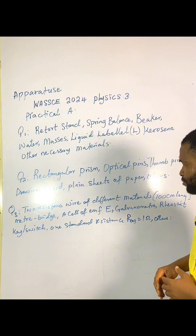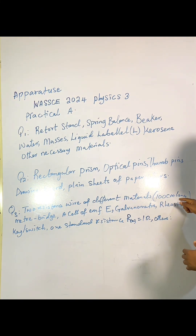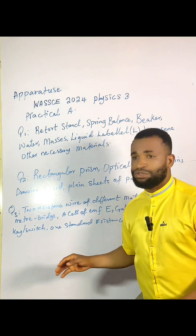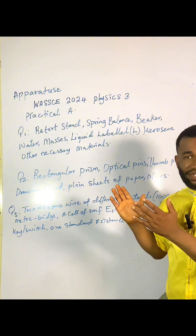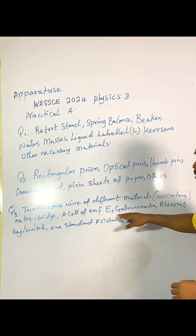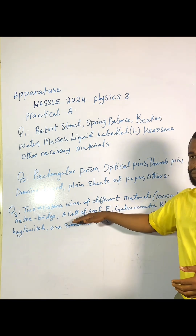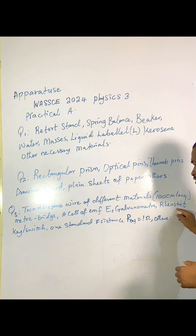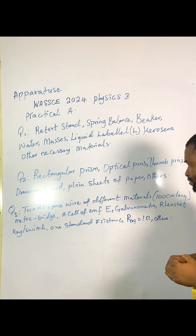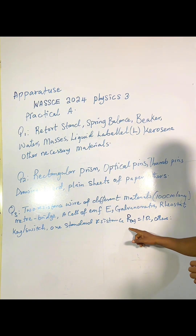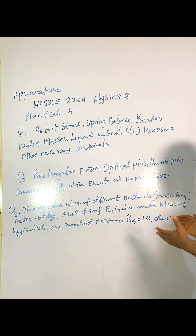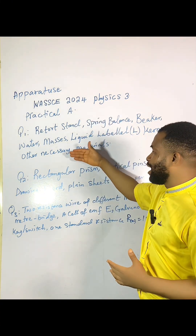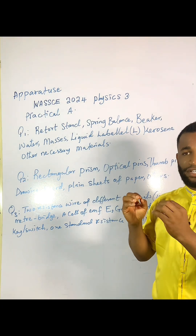For number three, you have two resistance wires of different materials, each 100 centimeters long — this is already built into your meter bridge, so a separate wire is unnecessary. You also need a cell of EMF E; the value should be three volts, which is 1.5 volts for each cell. Then a galvanometer, a rheostat — which is very important for controlling the current flowing in the circuit — a key, one standard resistor R sub X of 1 ohm, and other materials. The experiment may require you to identify resistance values, with your slope possibly being 1 ohm depending on how the question is framed. These are the apparatus for this year, and we will be running this experiment in a video coming shortly.